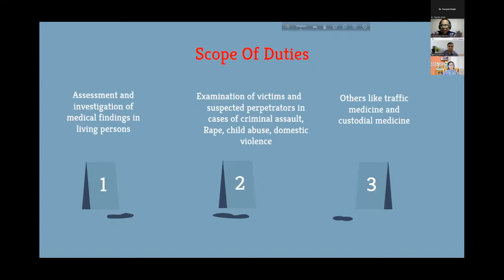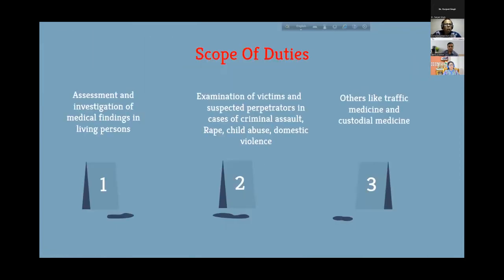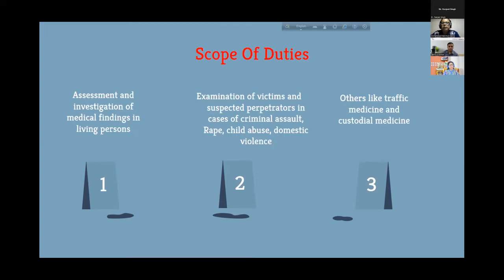The scope of clinical forensic medicine has three main areas: one is assessment and investigation of medical findings in living persons — we not only deal with dead bodies but also with living persons. This includes examination of victims and suspected perpetrators in cases of criminal assault, rape, child abuse, domestic violence, as well as traffic medicine and custodial medicine.